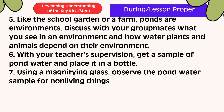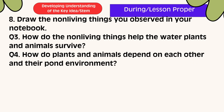Discuss with your group mates what you see in the environment and how water, plants, and animals depend on their environment. With your teacher's supervision, get a sample of pond water and place it in a bottle. Using a magnifying glass, observe the pond water sample for non-living things. Draw the non-living things you observe in your notebook. Question 3: How do the non-living things help the water, plants, and animals survive? How do plants and animals depend on each other and their pond environment?